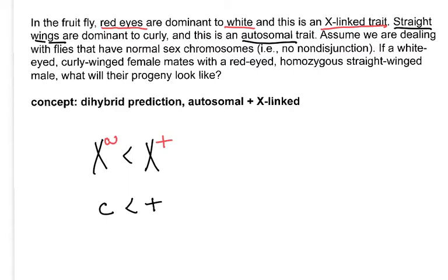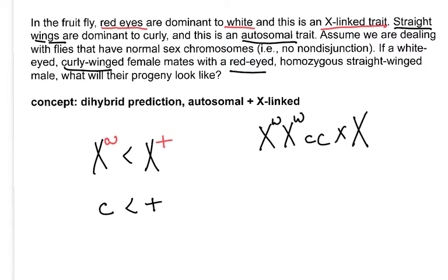We assume flies have normal sex chromosomes, i.e. no non-disjunction — important because many textbooks focus on early fly genetics experiments illustrating X-linked genes through non-disjunction cases. A white-eyed, curly-winged female: since she's white-eyed she must be X^w X^w, and since curly is recessive she's little c, little c. She mates with a red-eyed male who has the normal allele and a Y chromosome, and he's homozygous for straight wings, so plus-plus at the wing locus.